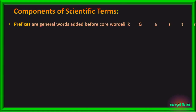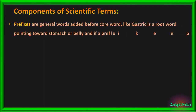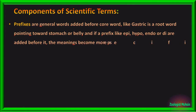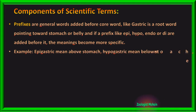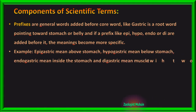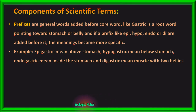Prefixes are words used before the root word to make meanings more specific. For example, gastric is a root word pointing towards the stomach or belly. If prefixes like epi, hypo, endo, or di are added before it, the meanings become more specific: epigastric means above the stomach, hypogastric means below the stomach, endogastric means inside the stomach, and digastric means muscles with two bellies. If these prefixes are used in other terms, their meaning will be exactly the same.